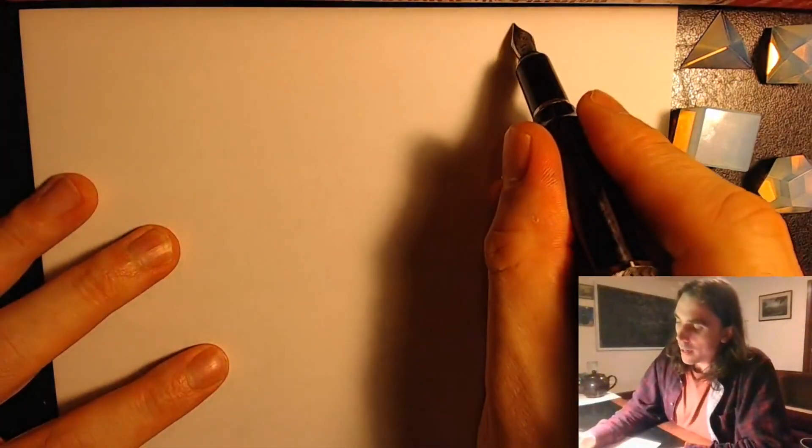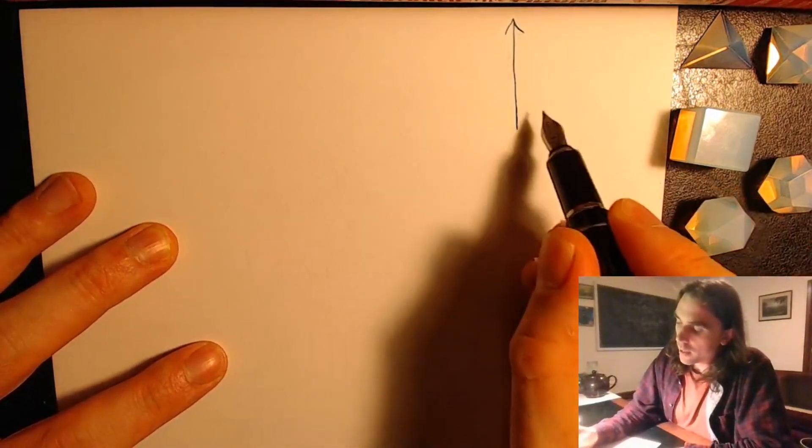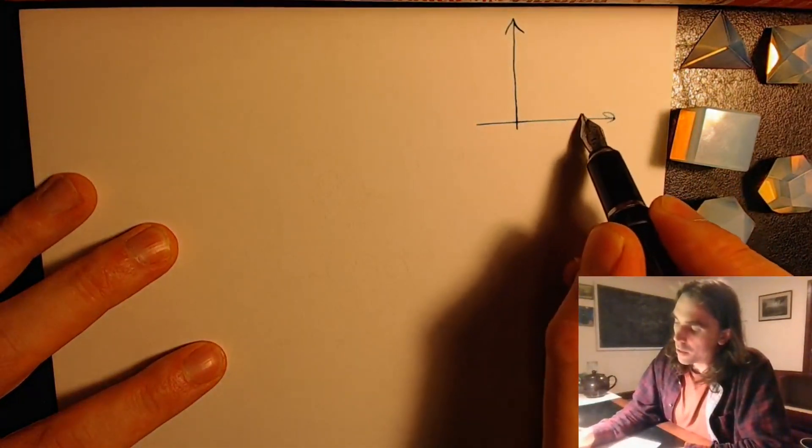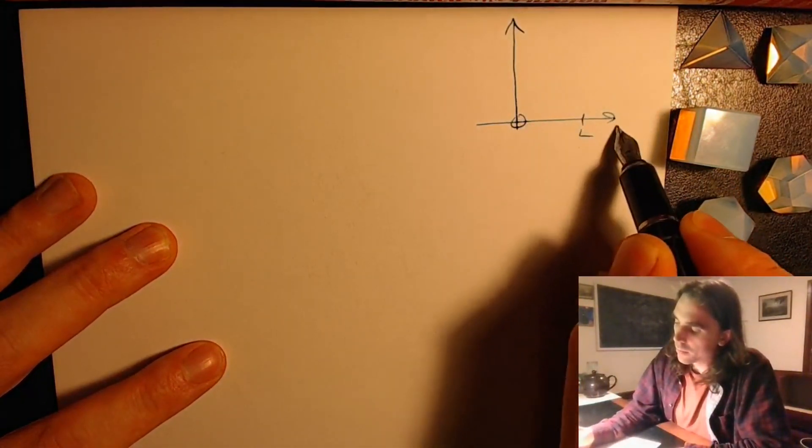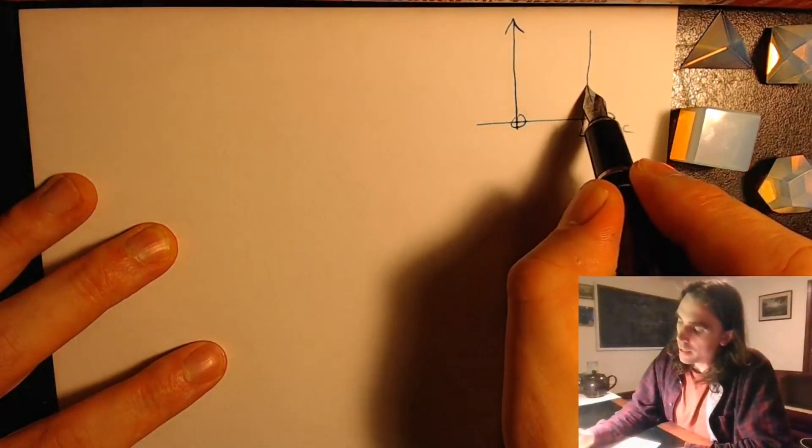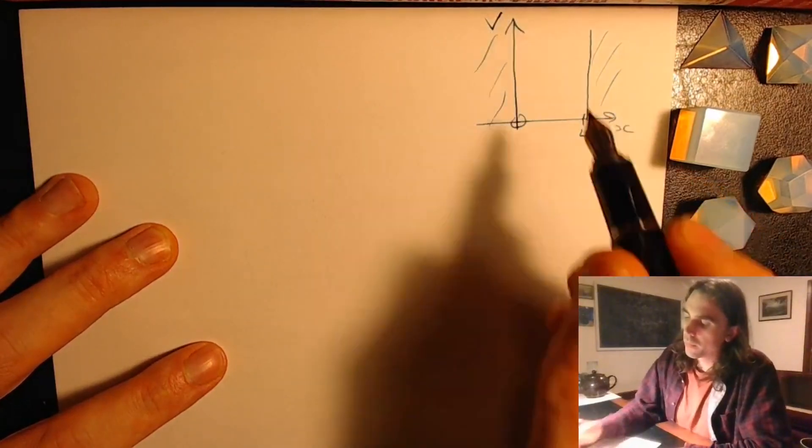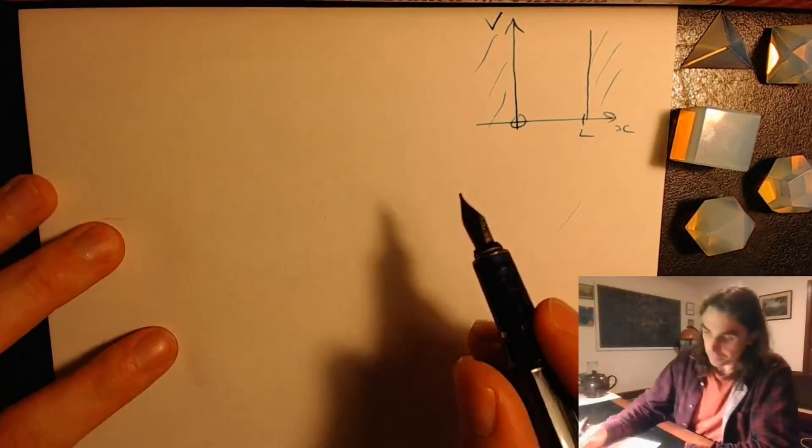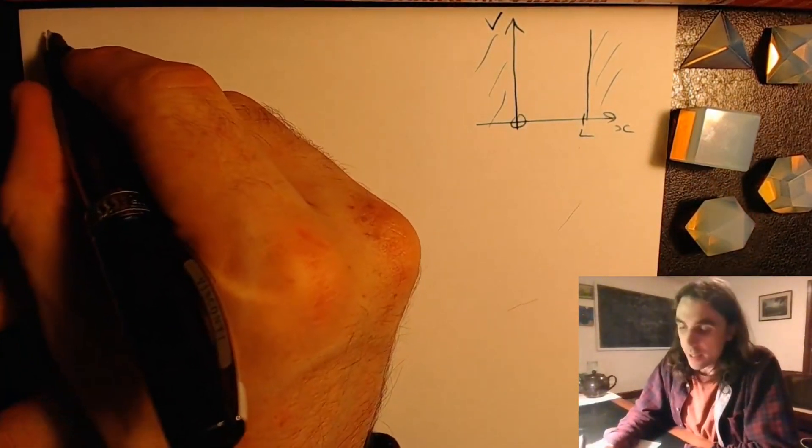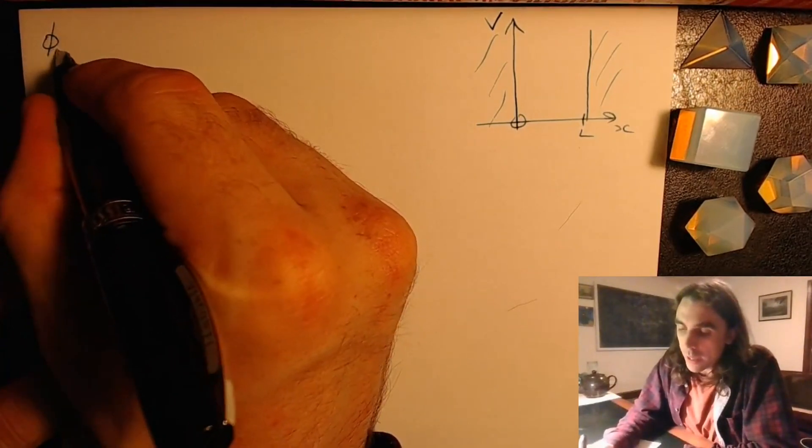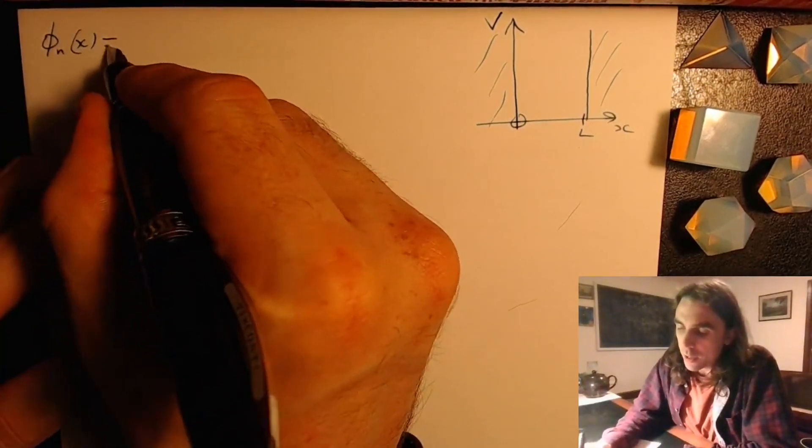Alright, so let's take a look at the energy eigenstates of the infinite potential well. Another quick reminder as to what the potential looks like. We have potential going from zero to L along x, up to infinity here,